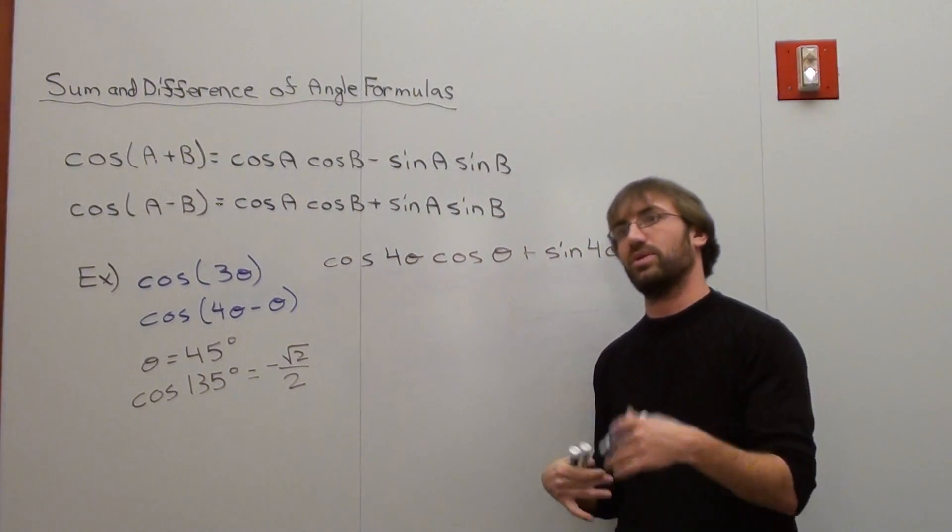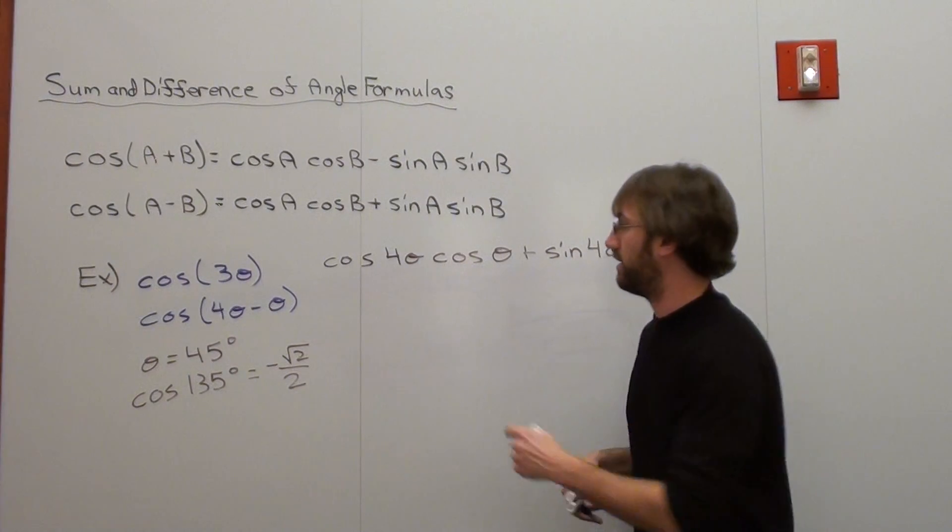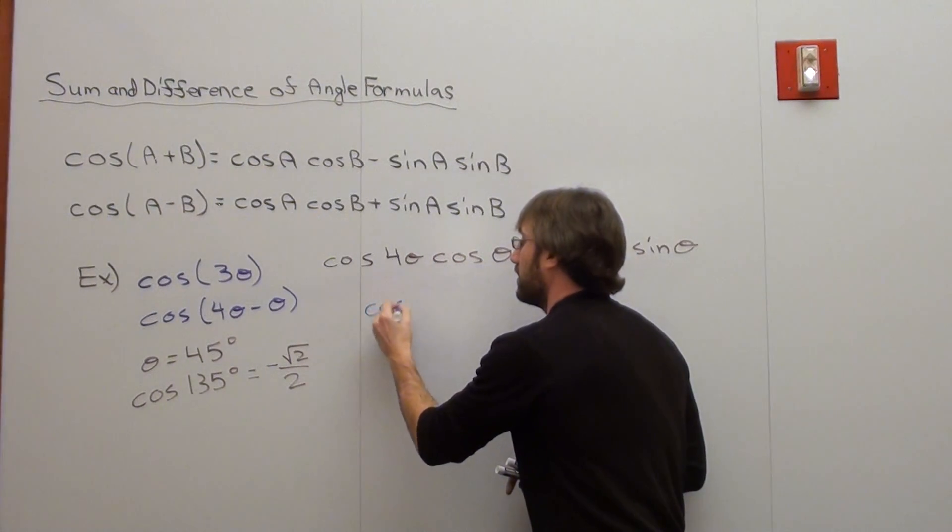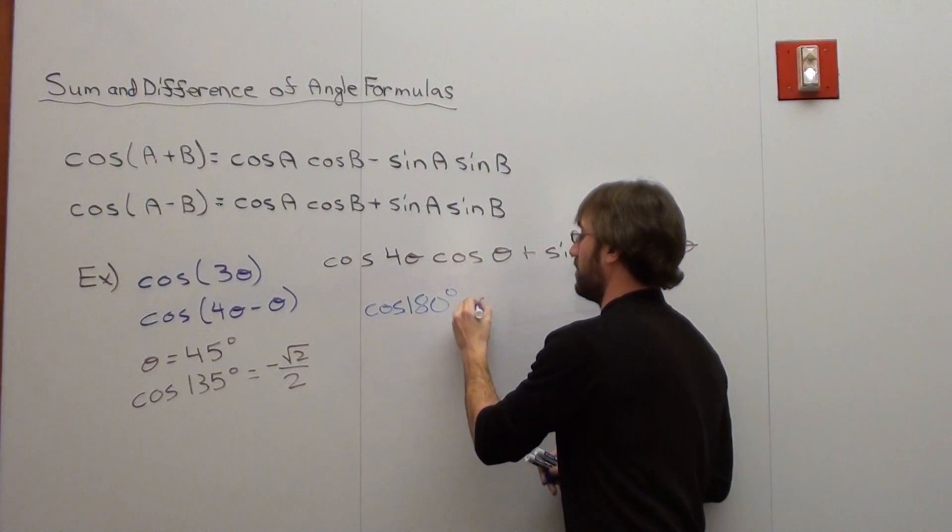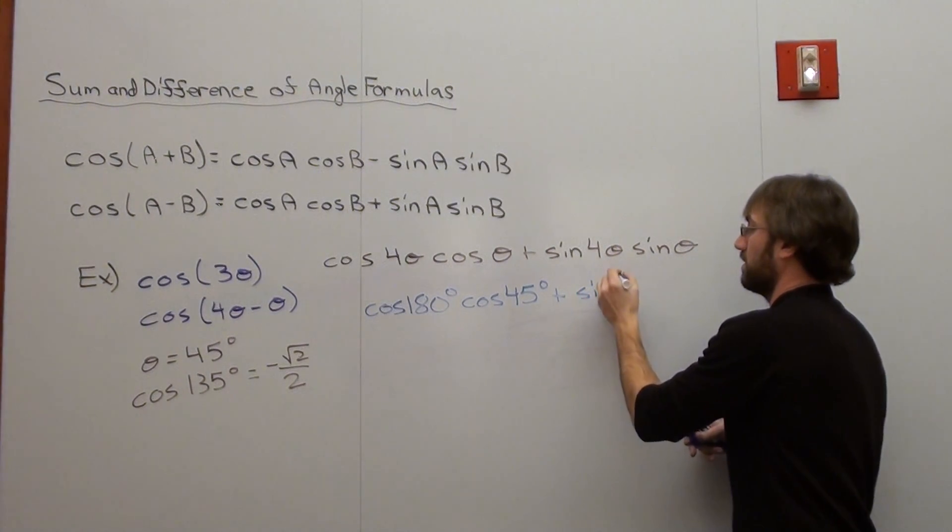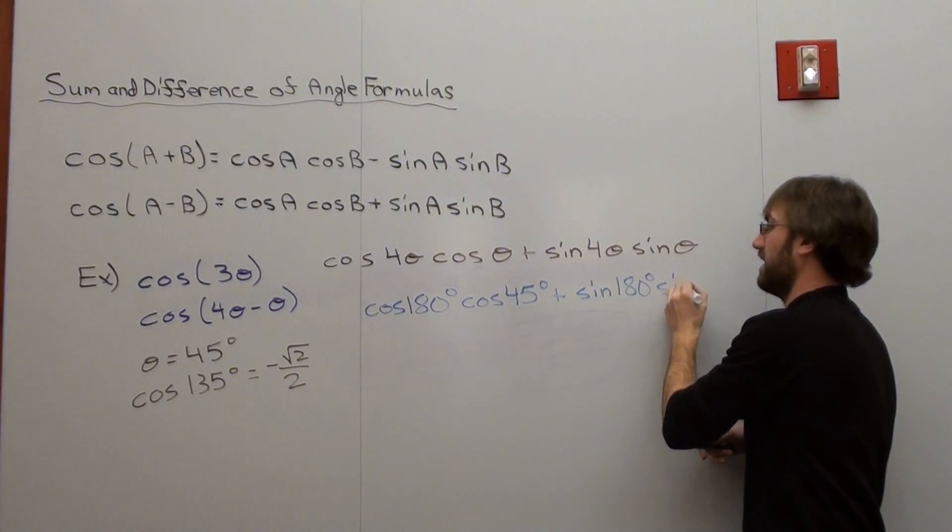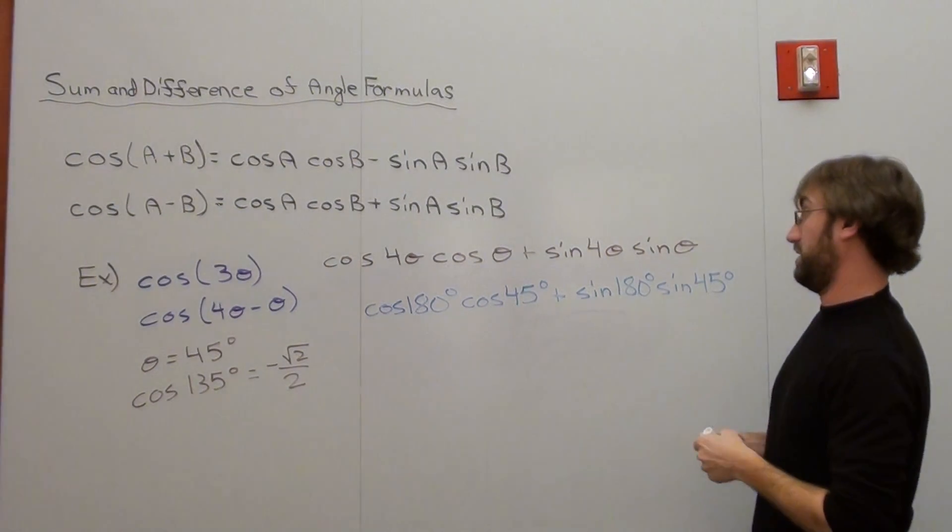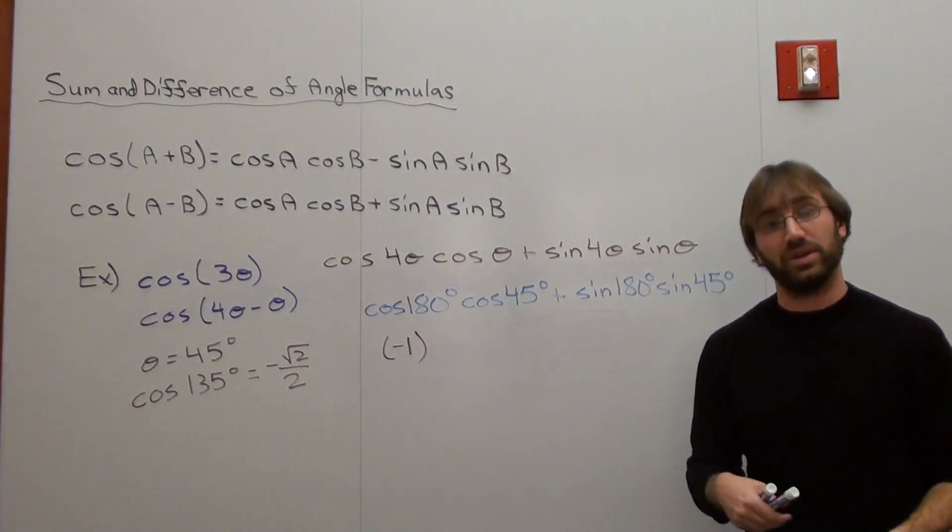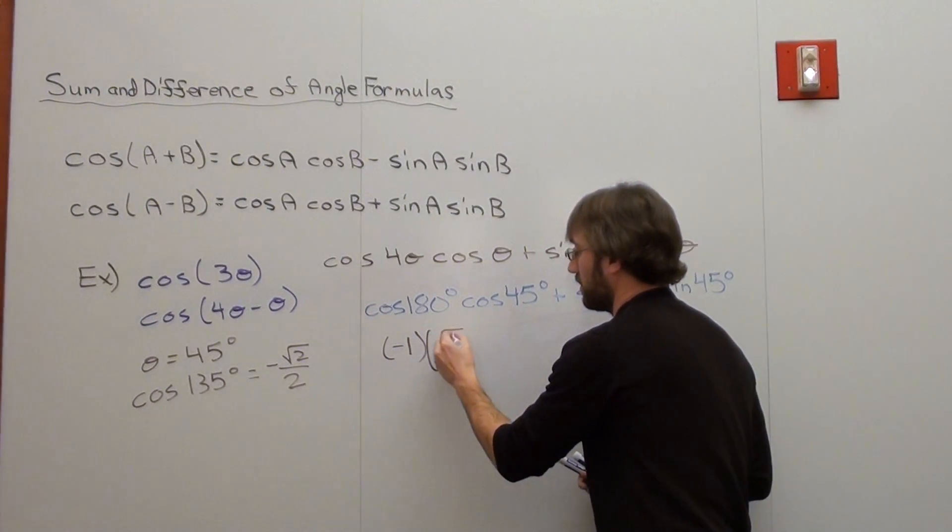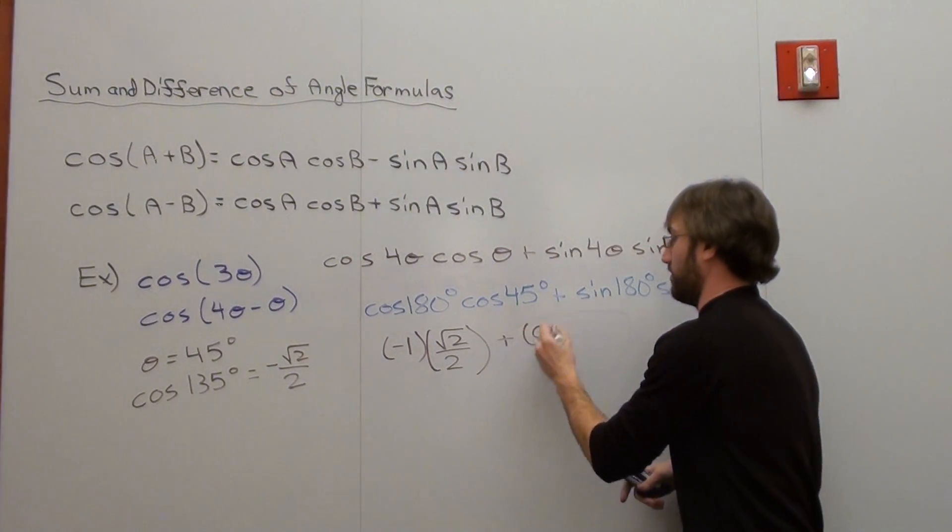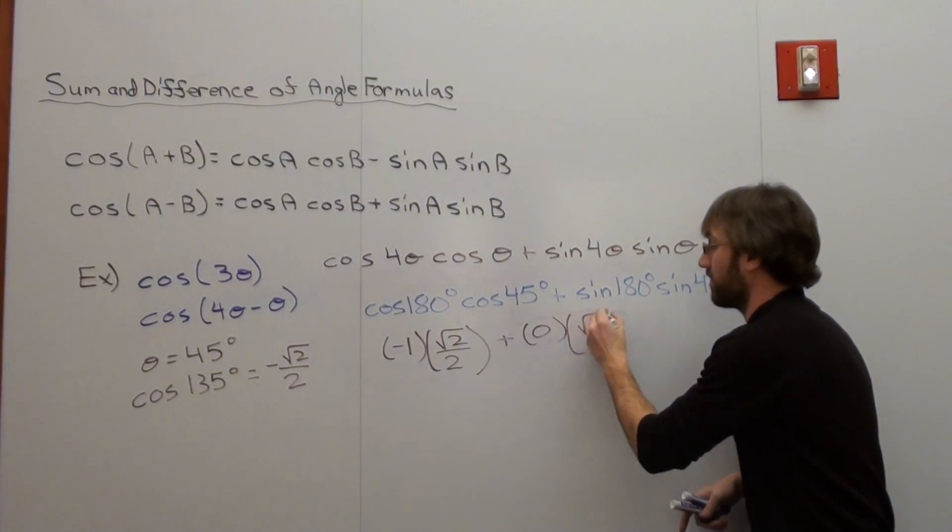Cosine of 4 theta is the cosine of 4 times 45 degrees, which is the cosine of 180. I'm just plugging in 45 for all my thetas, so 45 times 4 is 180. So cosine of 180 degrees times the cosine of 45 degrees, plus the sine of 180 degrees, times the sine of 45 degrees. Well, let's see what ends up happening. Cosine of 180 is negative 1. Cosine of 45 degrees is root 2 over 2. Plus, the sine of 180 degrees is 0. It doesn't really even matter what this is now. The sine of 45 degrees is root 2 over 2.